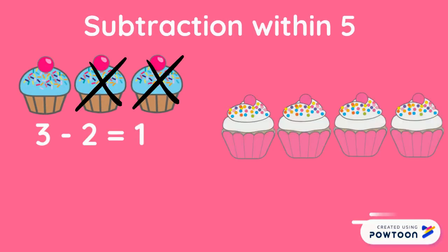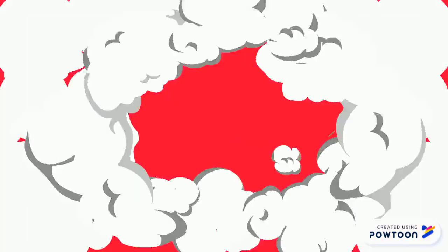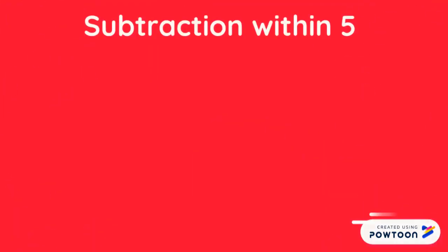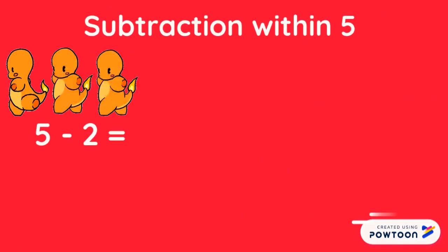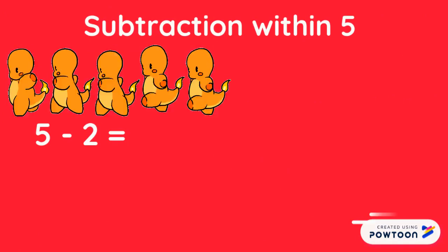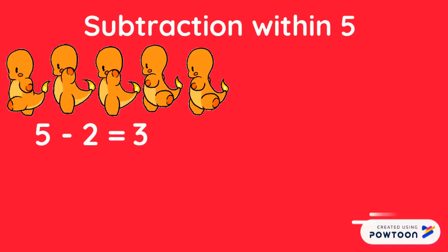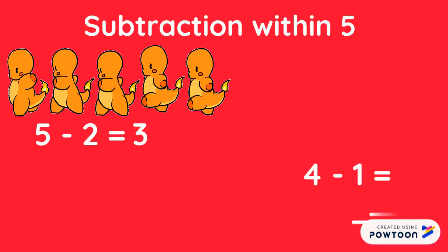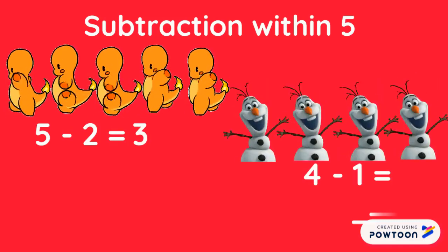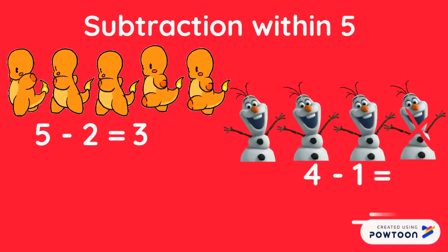Three minus two equals one. Four minus three equals one. Five minus two equals three. Four minus one equals three.